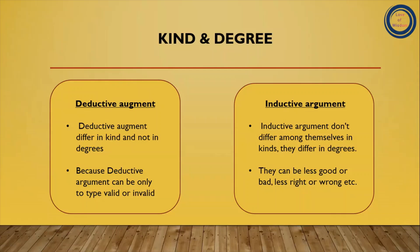But in deductive inference, argument differs in kind and not in degrees. Because a deductive argument can be only two types: valid or invalid. But inductive argument can be less good or bad, less right or wrong, etc. So kind is related to deductive argument only and degree is related to inductive argument.